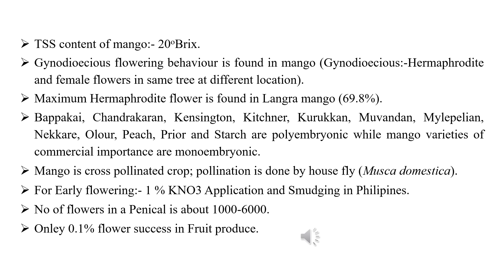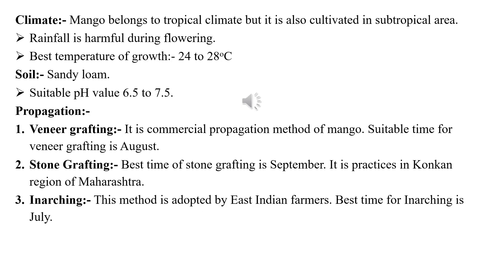Another problem is flower and fruit drop. To check flower and fruit drop, application of 10 ppm 2,4-D or 20 to 25 ppm naphthalene acetic acid (NAA) is recommended during and before flowering time. Polyembryony means more than one embryo found in a single seed.